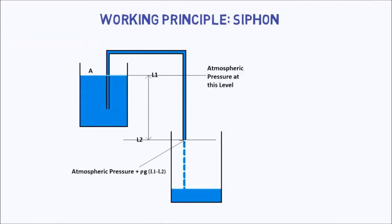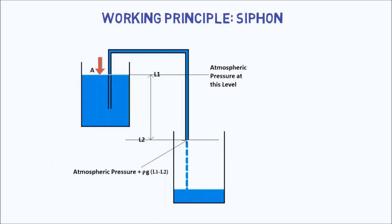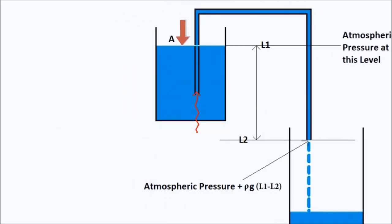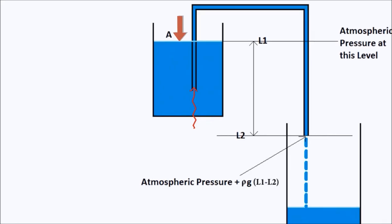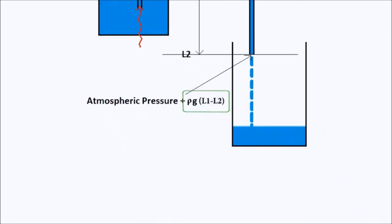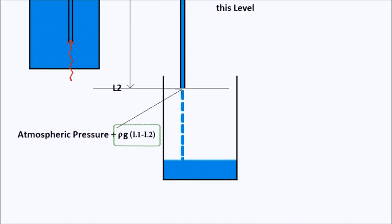Let's understand the working principle of the siphon with the following setup. Atmospheric pressure pushes down on the liquid surface A, pushing liquid into the pipe. The pressure is greater at the other end by an amount equal to the density multiplied force of gravity multiplied by the difference between water levels. This excess pressure forces liquid out of the lower end of the pipe.